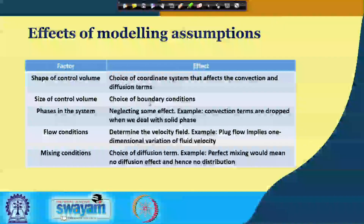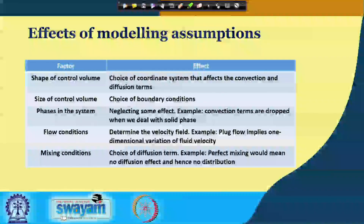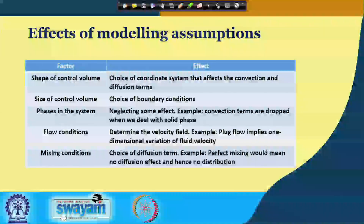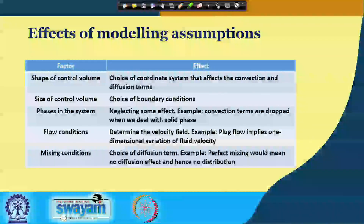First is the shape of the control volume. As we have seen in our earlier lecture, depending on the shape of the control volume, we have to choose the appropriate coordinate system. For example, if we have a rectangular or cuboid structure, we will choose rectangular coordinates. If we have a cylindrical structure, we go by cylindrical coordinates, and if we have a spherical structure, we go by spherical coordinates.